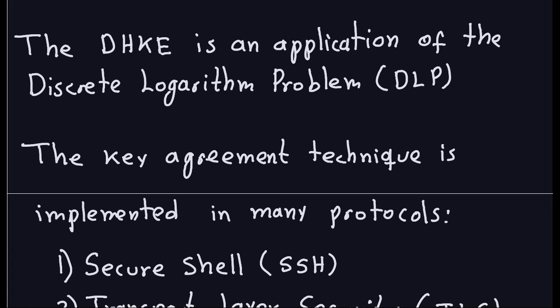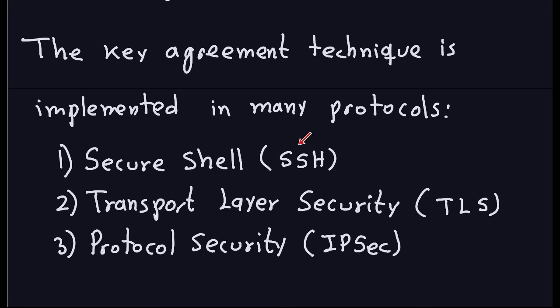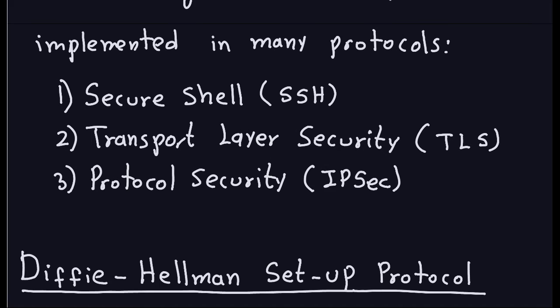This key agreement technique is important because it is also implemented in real life in many protocols. A few of them are listed here: the Secure Shell, SSH, which is the one you use to communicate with a remote terminal; the Transport Layer Security, TLS; and IPsec. All of these use the Diffie-Hellman key exchange. This is actually what your browser uses when it tries to set a key for symmetric encryption with some website. The first thing it does is perform the Diffie-Hellman key exchange.